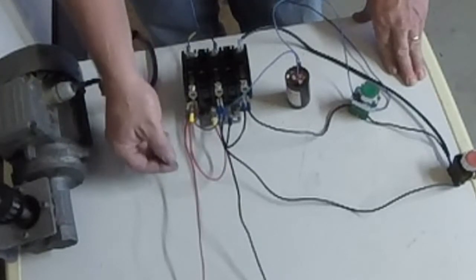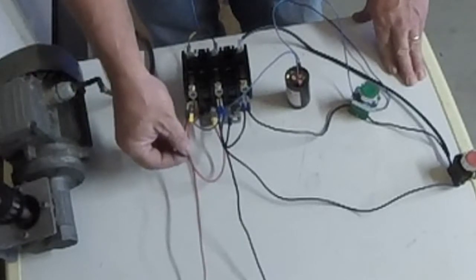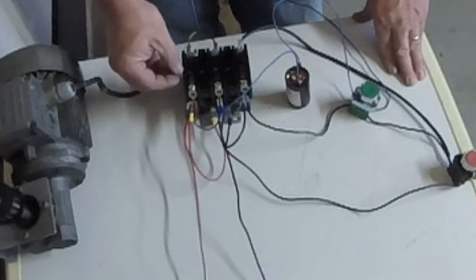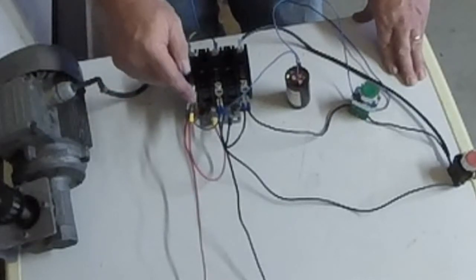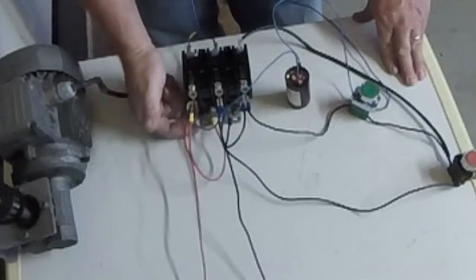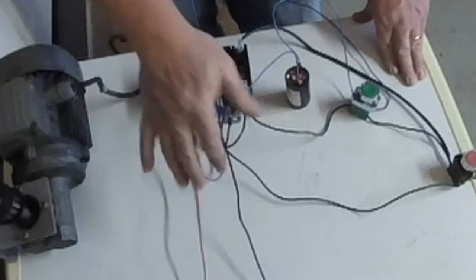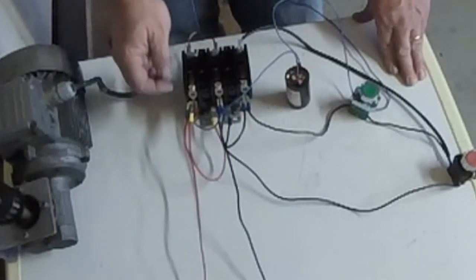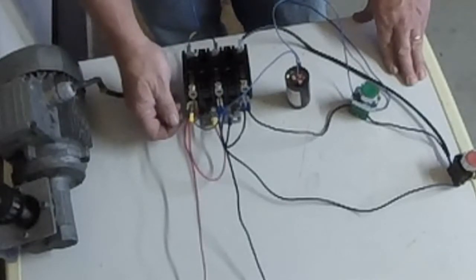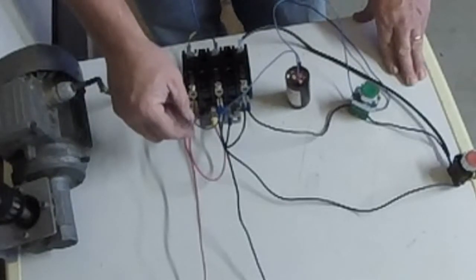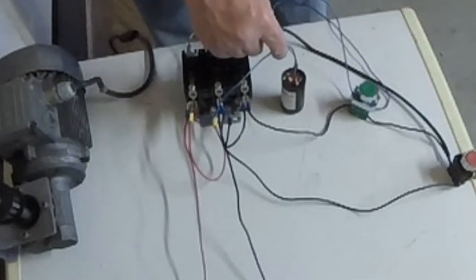Basically what happens here is we have incoming power. This power is split right here at its junction, the first pole of the contactor. It provides power for one side of the coil. This coil is 240 volt operation, so we'll be using both leg lines in order to bring the coil voltage to operate this magnetic starter.